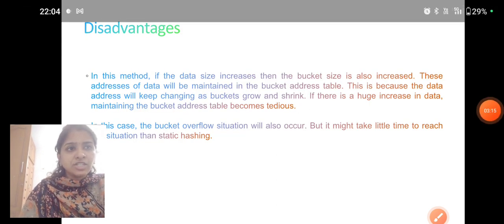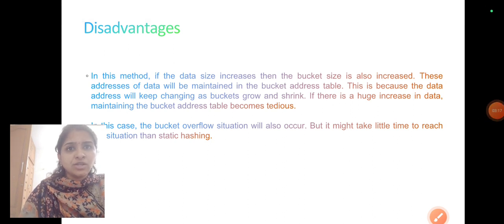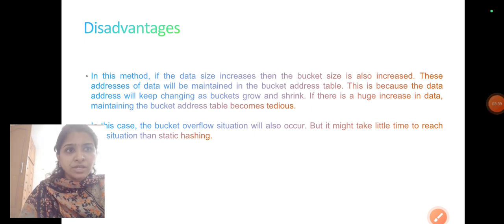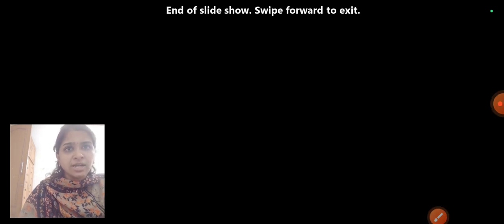What are the disadvantages of this bucket overflow method? If the data size increases then the bucket size also increases. These addresses of data will be maintained in the bucket address table. This is because the data address will keep changing as buckets grow and shrink. If there is a huge increase in data, maintaining the bucket address table becomes very tedious. In this case bucket overflow situation will also occur, but it might take little time to reach this situation than static hashing.